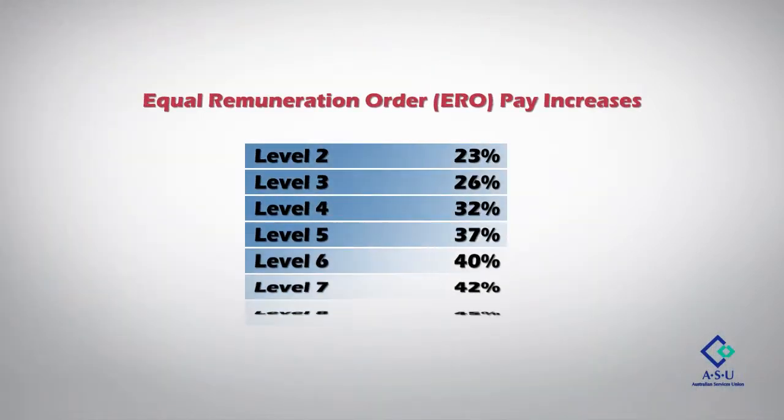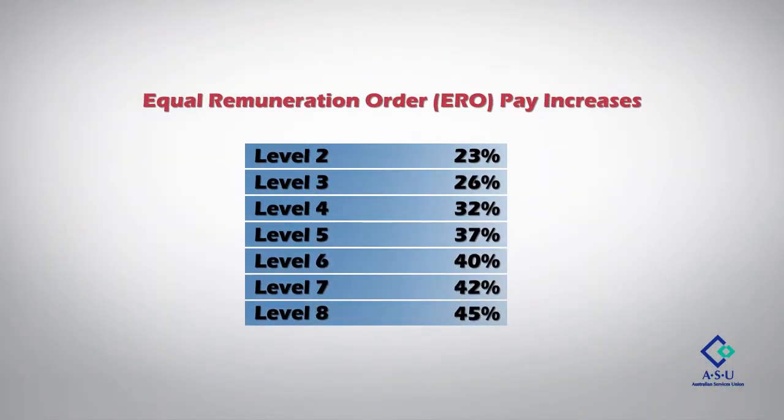There have been three parts to the decision by the Fair Work Commission on equal pay for social and community sector workers. The ERO decision overall sets a percentage increase for each classification level in the modern award. Part one of these videos covers the first two parts of the ERO decision in more detail. Here we're concerned with the last part of the ERO decision, handed down on June 22, 2012.